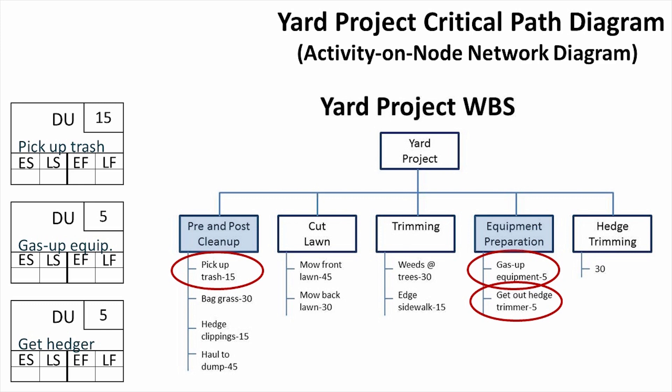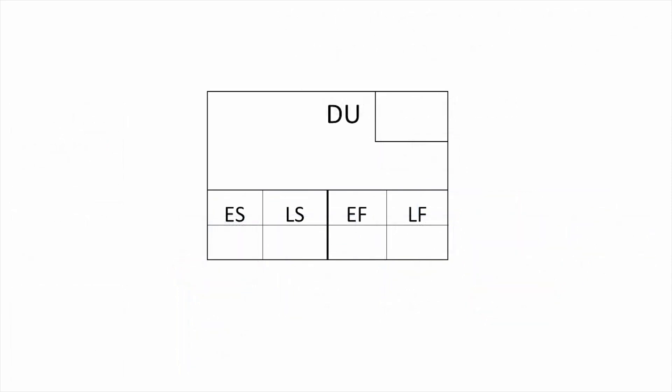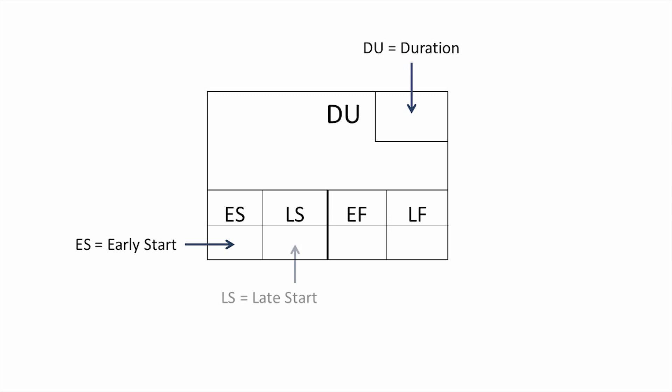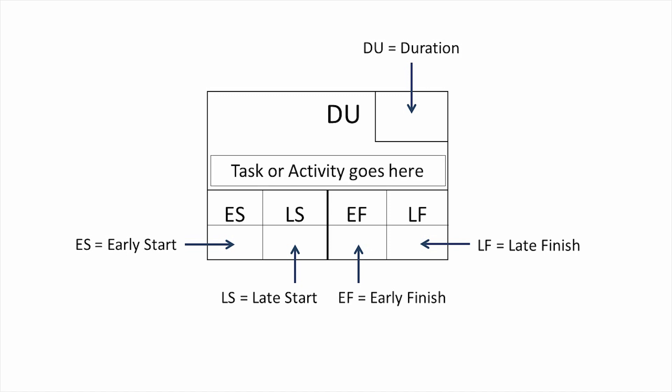These boxes might look a little strange, so let me explain what this information means. In each box we have some abbreviations. DU stands for duration — that's how long in minutes, hours, or weeks, whatever your scheduling timeframe is. In our case, duration for each task is in minutes. ES stands for early start, LS stands for late start, EF stands for early finish, and LF is late finish. In the middle we list the task or activity.